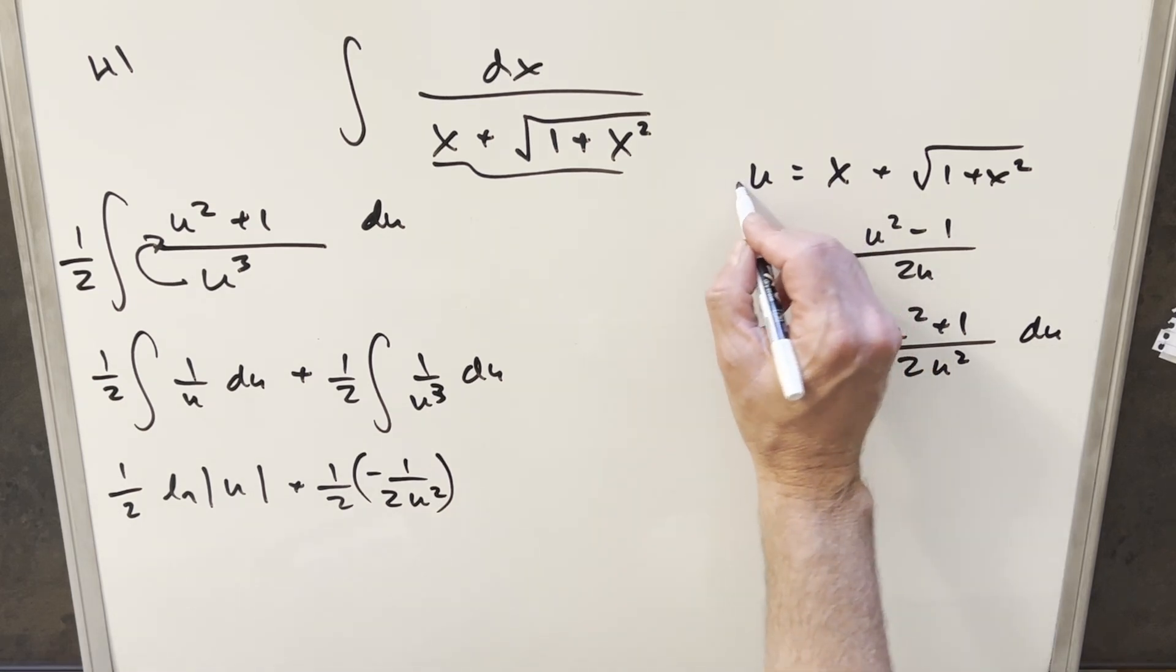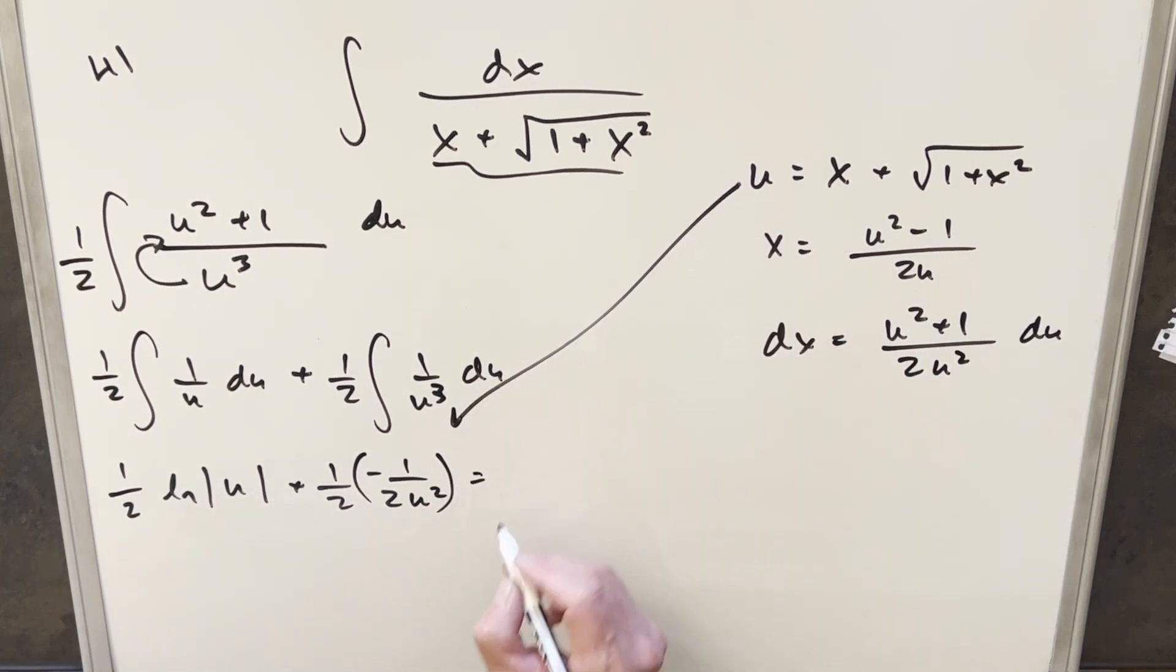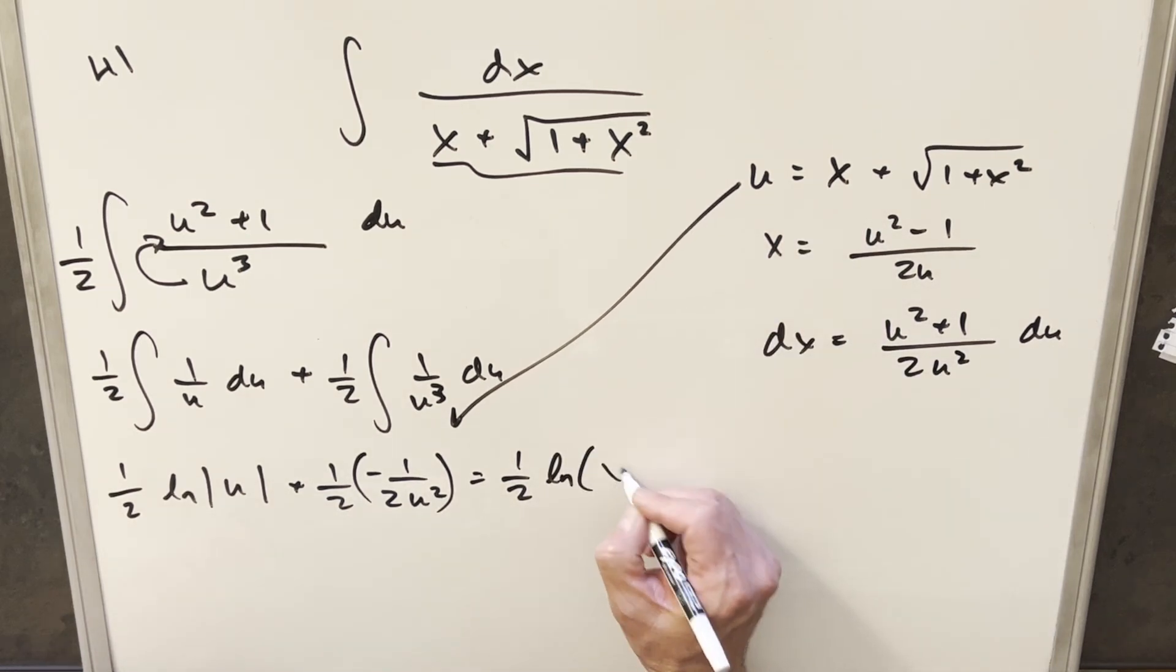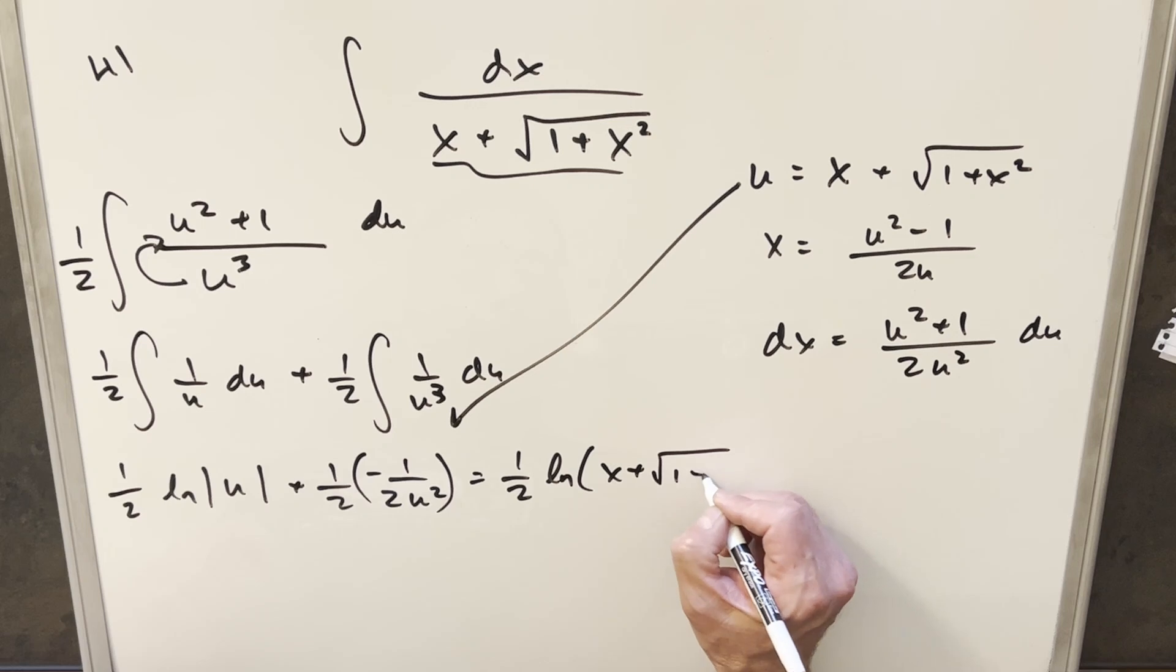And we just need to back substitute with the u in order to finish this off. So let's see what we get. We're going to have 1 half here, natural log. I'm going to drop the absolute value. This is always going to be positive. So I'll write this x plus square root 1 plus x squared.